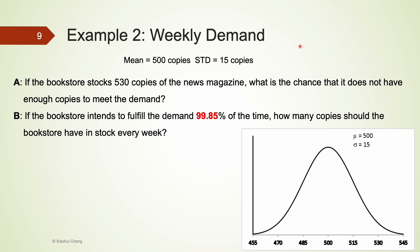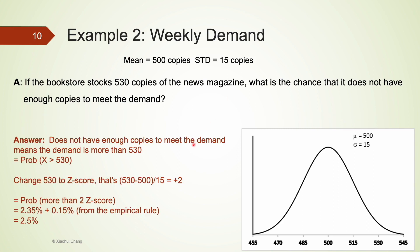Moving to the next example: a bookstore's weekly demand follows a normal distribution with a mean of 500 and a standard deviation of 15 copies. Part A: if the bookstore stocks 530 copies, what is the chance it does not have enough? Not having enough means demand exceeds 530. We convert 530 to a z-score: (530 − 500) ÷ 15 = positive 2.